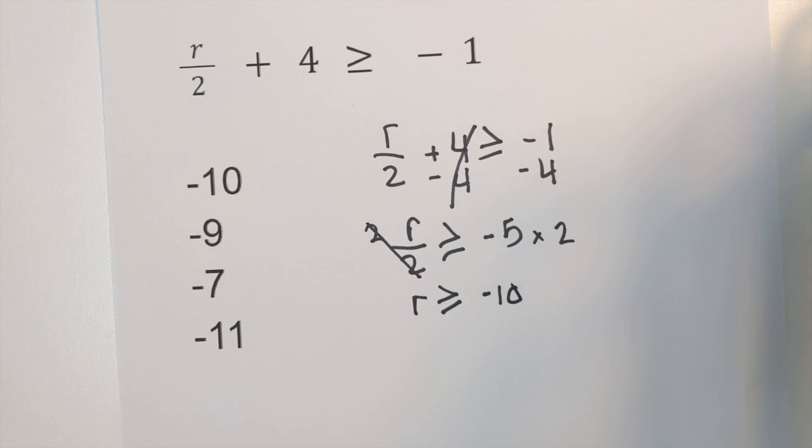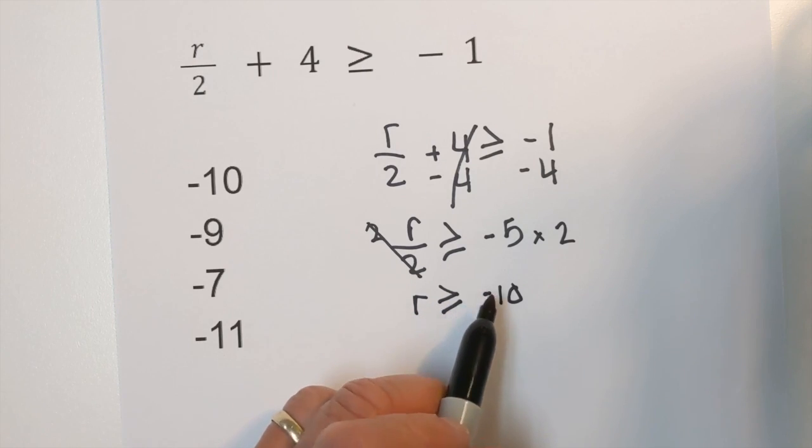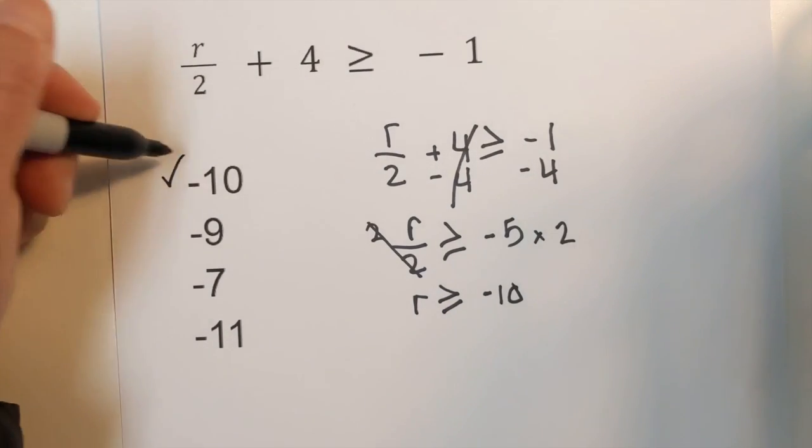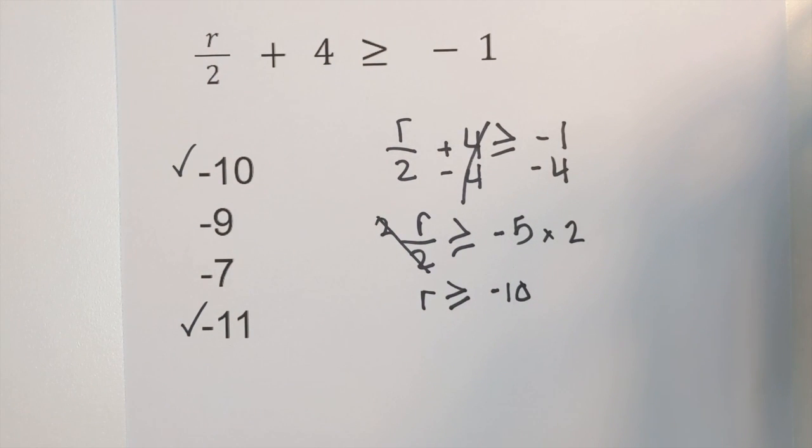Now let's see what numbers satisfy this. So it's got to be greater than or equal to negative 10. So we have negative 10, 7, and negative 11. Both of those satisfy this inequality. And let's work one final example.